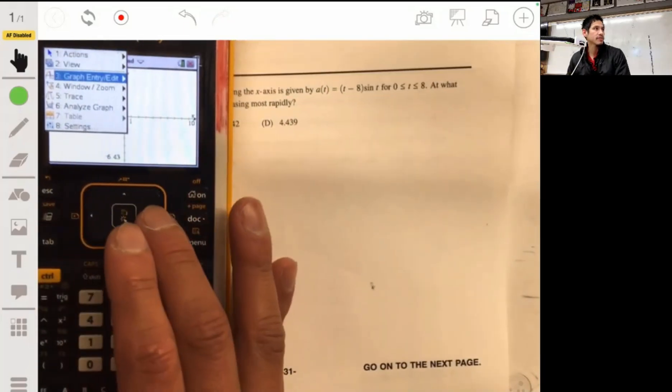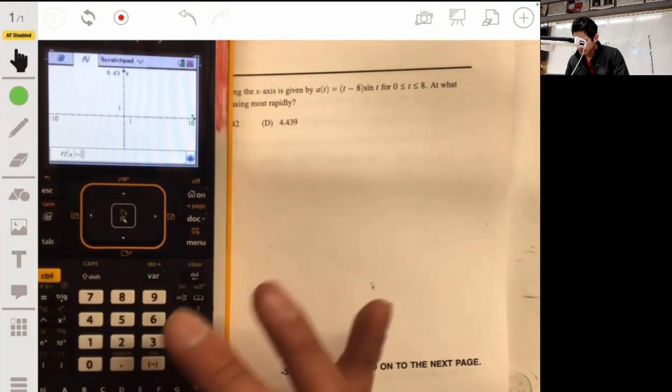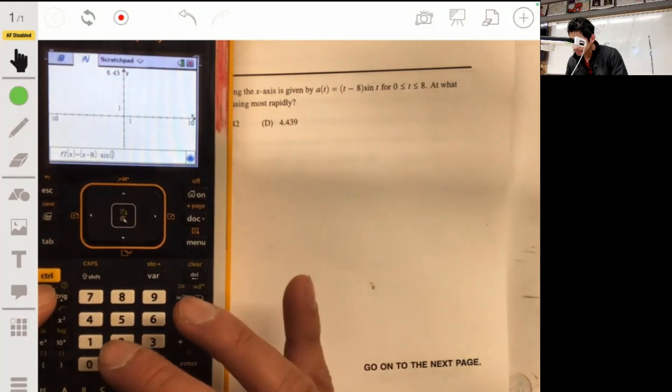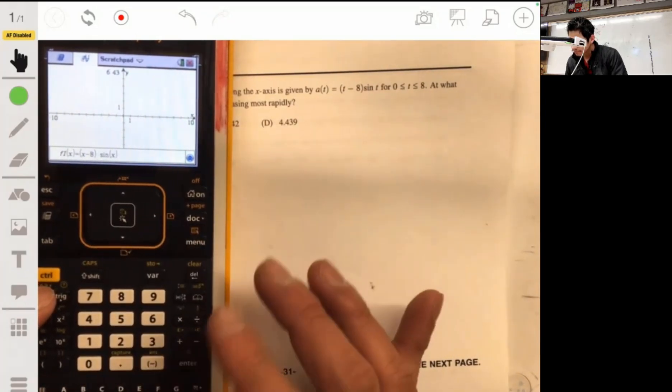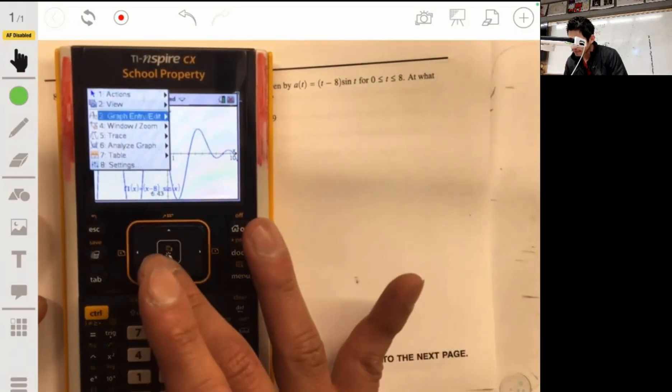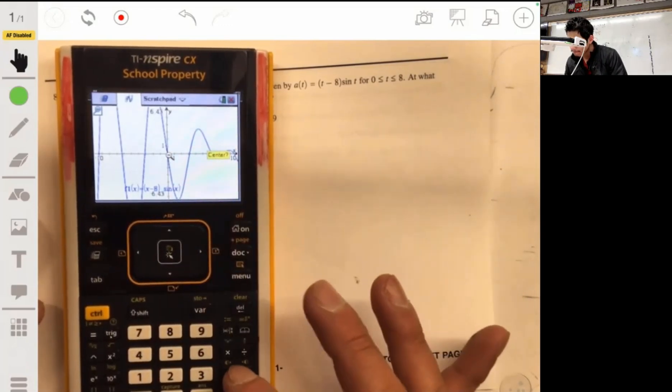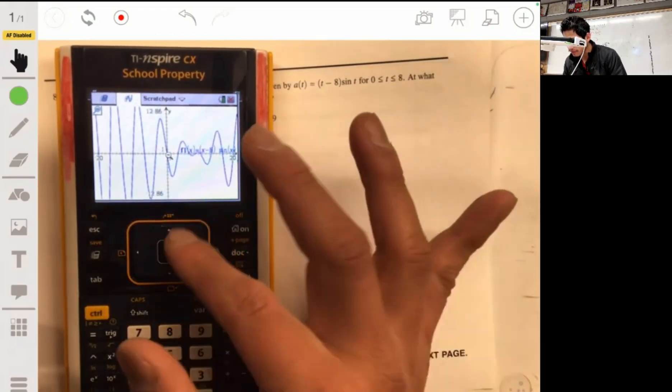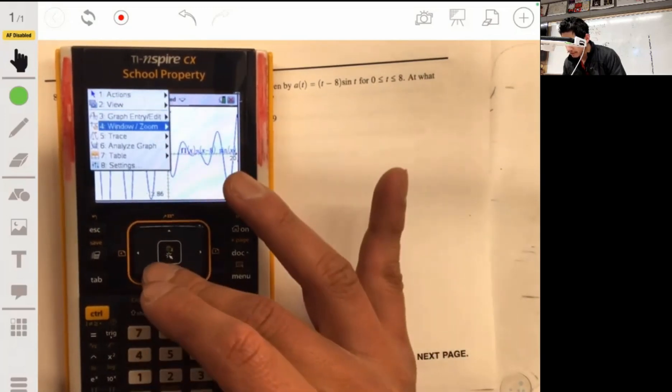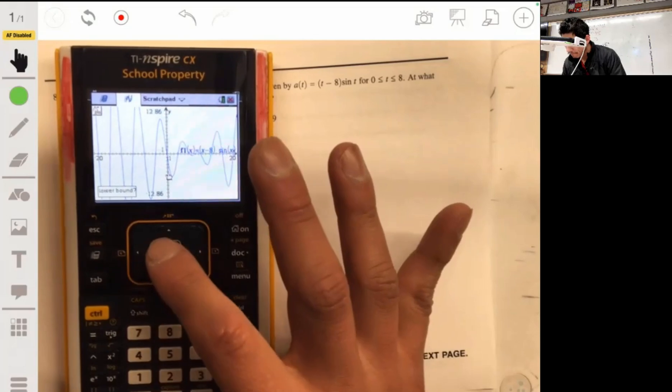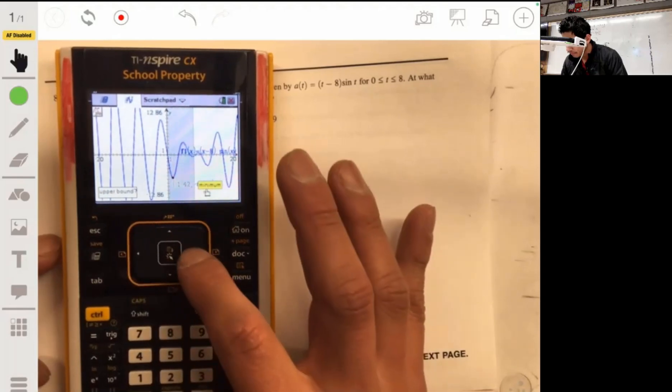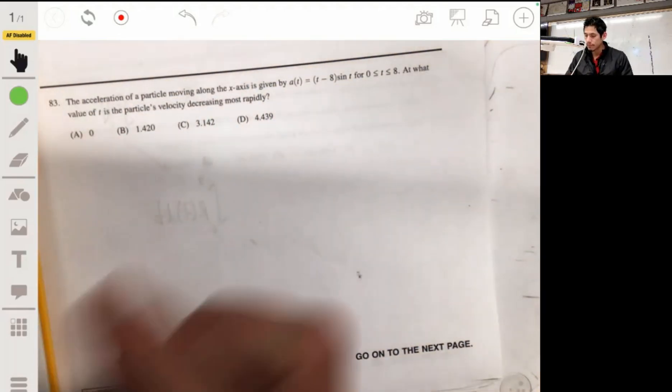Hopefully we don't have any technical difficulties here. x minus 8 times the sine of x. From 0 to 8, let's zoom out a little bit. We want to basically find the lowest value on this part from 0 to 8. It's definitely going to be over here, so let's analyze the minimum. We can see that it's going to be over there at 1.42 and negative 6.51. So the answer will be B.